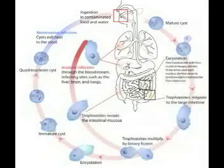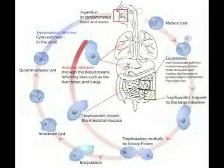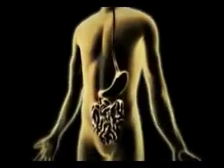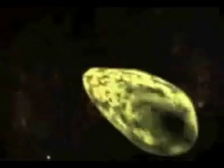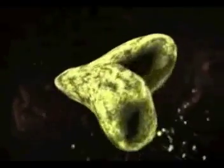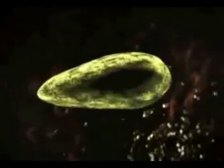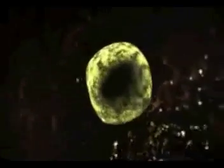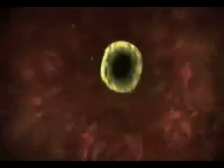The life cycle of Entamoeba histolytica is nicely summed up in this clip. The amoeba starts its life cycle as a free-living cyst in the water. When a human drinks contaminated water, the cyst enters the gut. Here, the amoeba emerges from the cyst, divides, feeds, and then re-encysts. When the cyst passes out of the body into the water, the life cycle is complete.